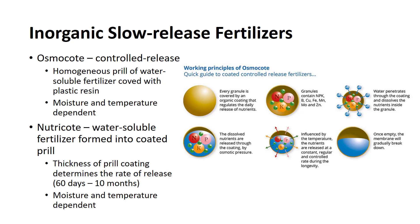NutriCoat is also a controlled-release fertilizer that is a water-soluble fertilizer formed into a coated prill. The thickness of the prill coating determines the rate of release, which varies from 60 days to 10 months. The process is moisture and temperature dependent and the nutrient release increases with temperature. NutriCoat appears to have the most uniform nutrient release rate of the slow-release fertilizers that have been tested.